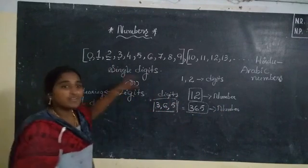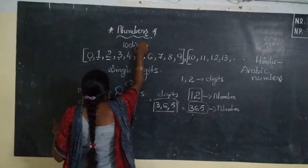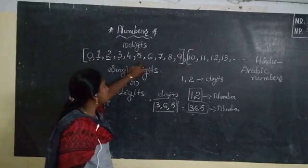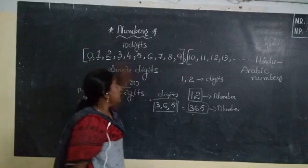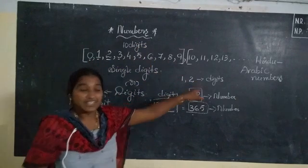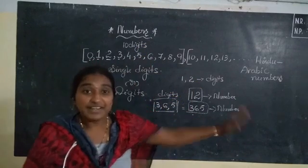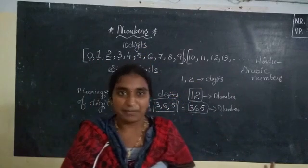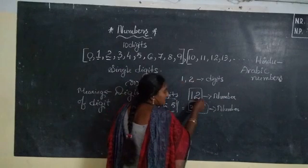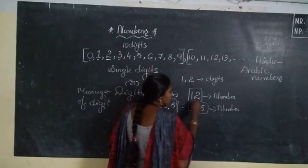So digits are used to frame the numbers. How many digits do we have? We have 10 digits including zero: 0, 1, 2, 3, 4, 5, 6, 7, 8, 9 — ten digits. These 10 digits are used to frame the numbers. By using 1 and 2, we write the number 12. By using 3, 6, and 5, we frame the number 365.